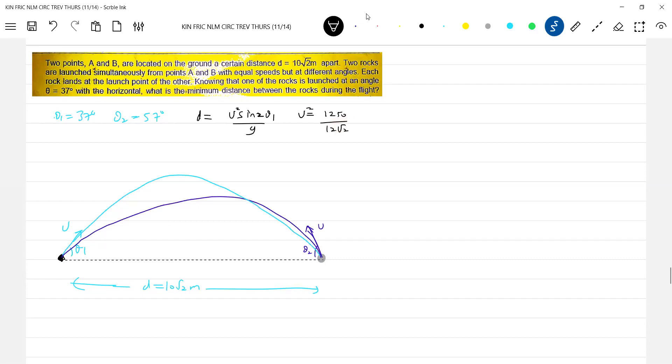Root 2 in numerator. 1250 root 2 by 12. I think we can simplify further.